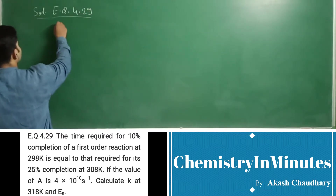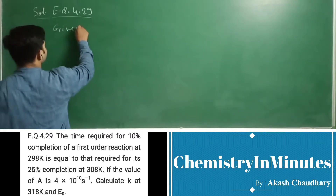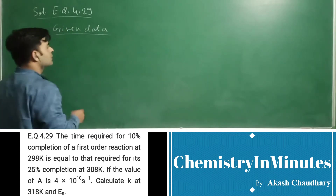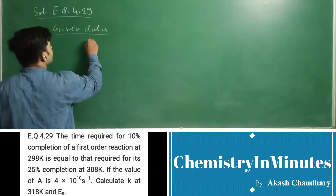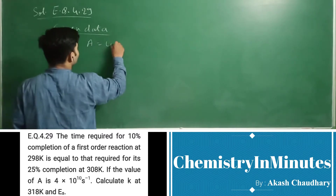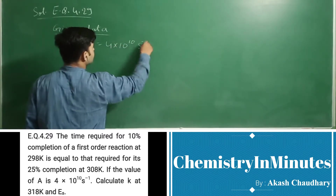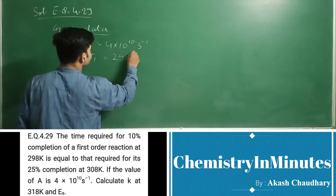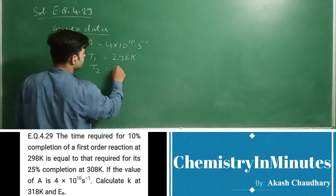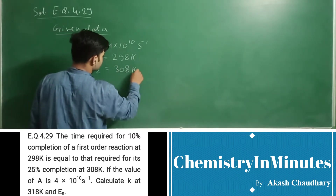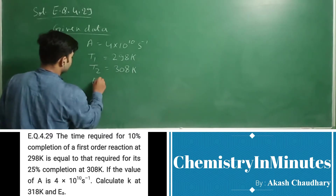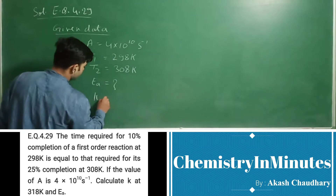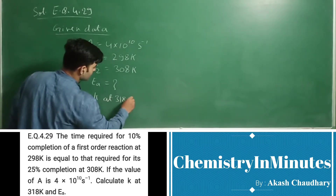First we will write the given data. A is equal to 4 into 10 raised to the power 10 second inverse. T1 is 298 Kelvin, T2 is 308 Kelvin. We have to find Ea, the activation energy, and k at 318 Kelvin.